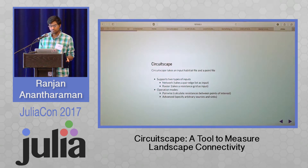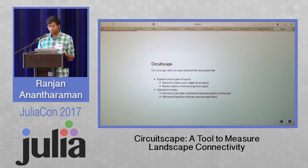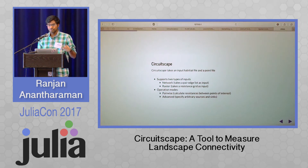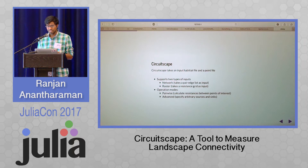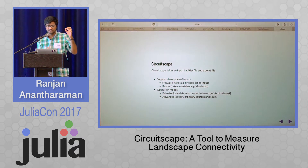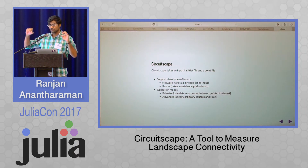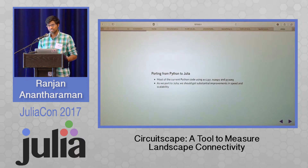Circuitscape is a piece of software that takes a couple of inputs. The first input is something called a habitat file, and another is called a point file — basically, how you model the entire landscape and what are the points of interest. You can specify it as an edge pair list like a network, or as a grid or raster. There are two modes of operation: pairwise mode, where you treat each pair of points of interest, assigning one as source and another as sink to calculate the least-resistant path; or advanced mode, where you specify arbitrary sources and sinks.